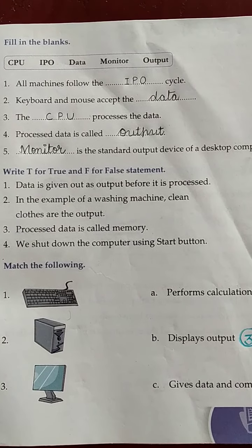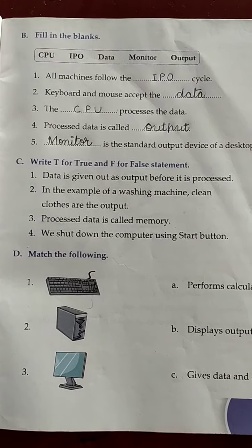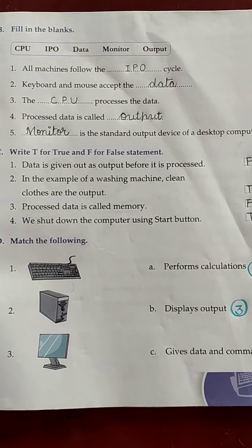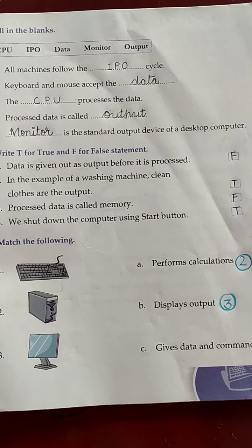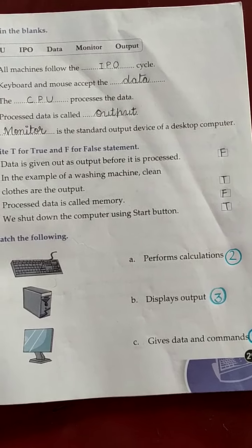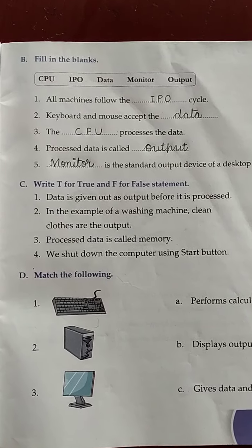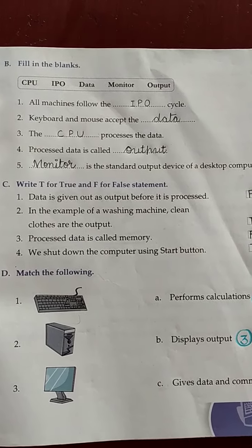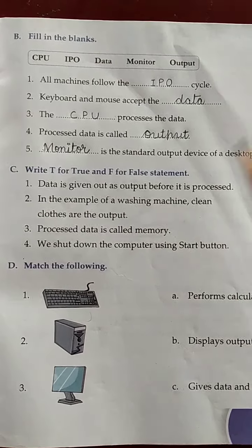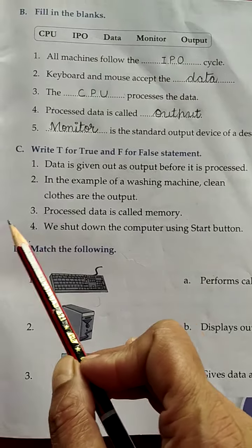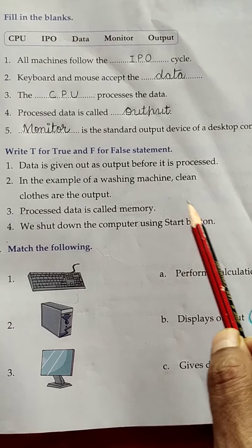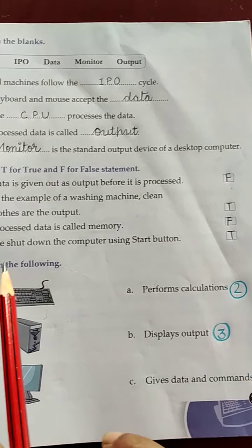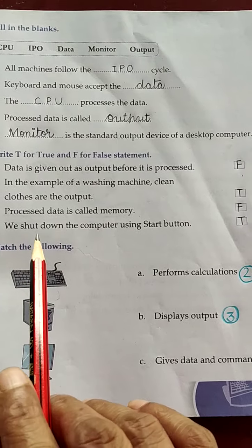For example, your fan: first we input by the switch, then the fan processes the air, and then the fan gives us output as air. Number 2: Keyboard and mouse accept the data which you enter. Then the CPU processes the data. We can see the processed data as output. The standard output device of a desktop is the monitor.